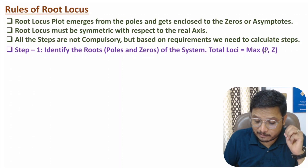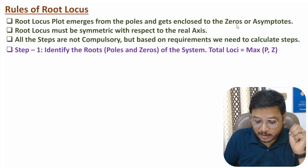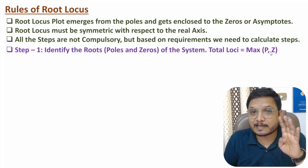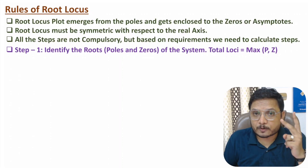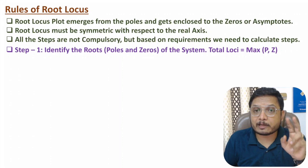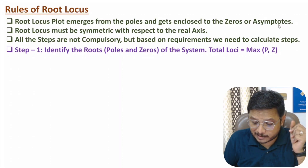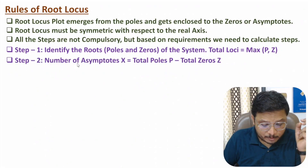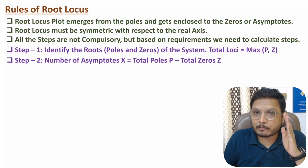Lines emerge from the poles and get enclosed to the zeros. If you have four poles there will be four lines, and if you have two zeros then two lines go into the zeros. But the other two lines should go into asymptotes. So the second step is calculating the number of asymptotes, which equals the total number of poles minus the total number of zeros.